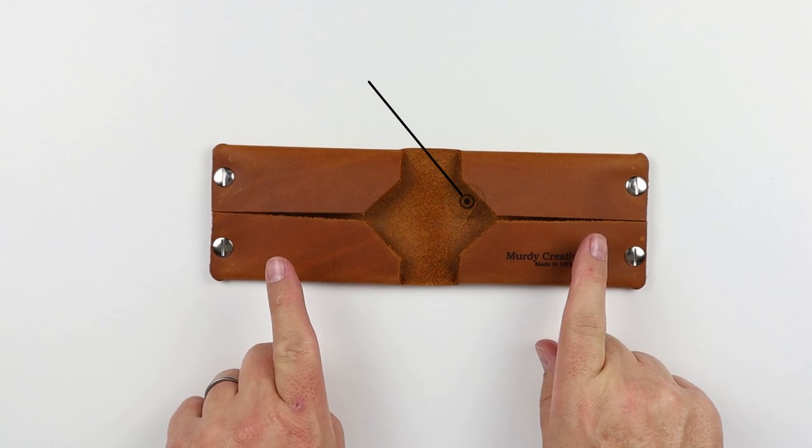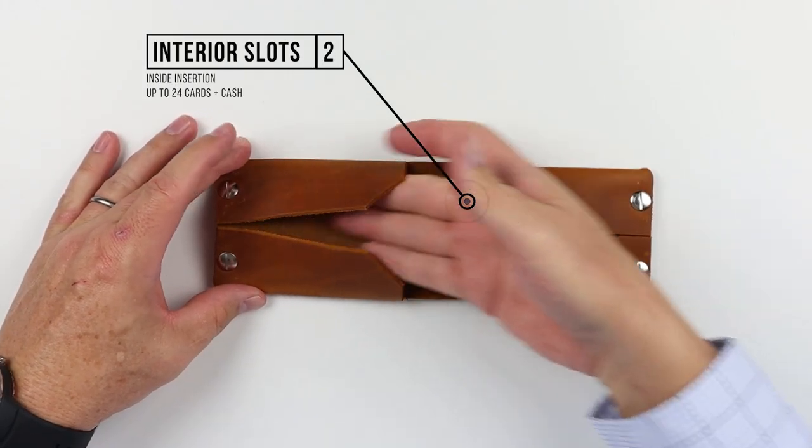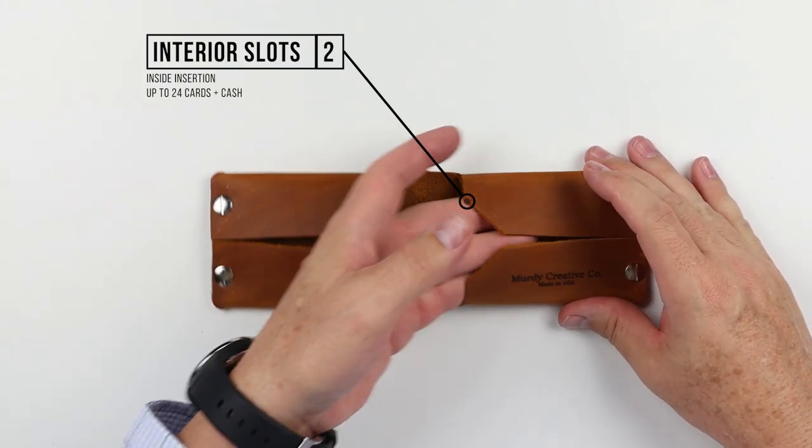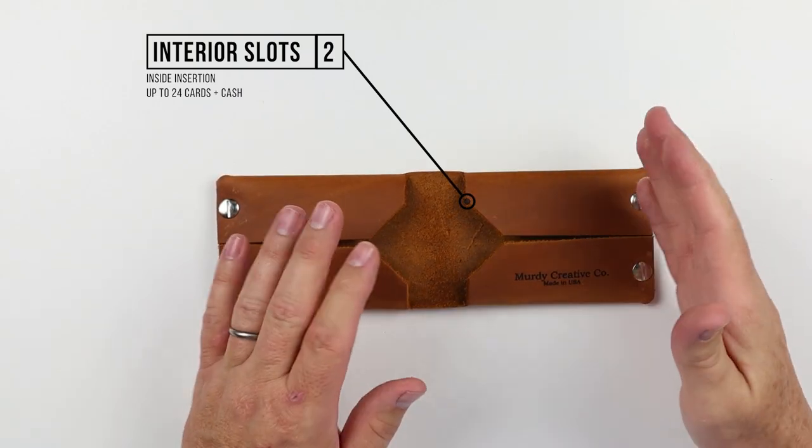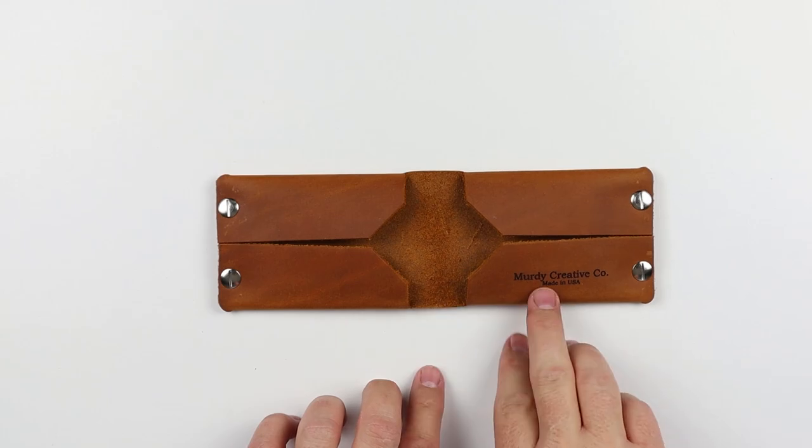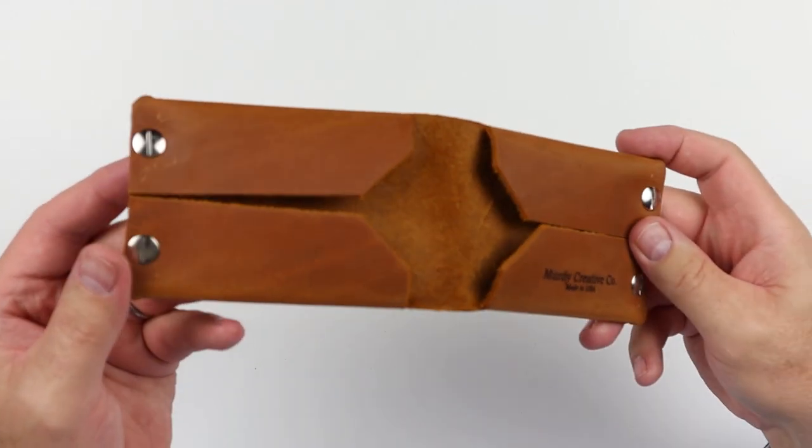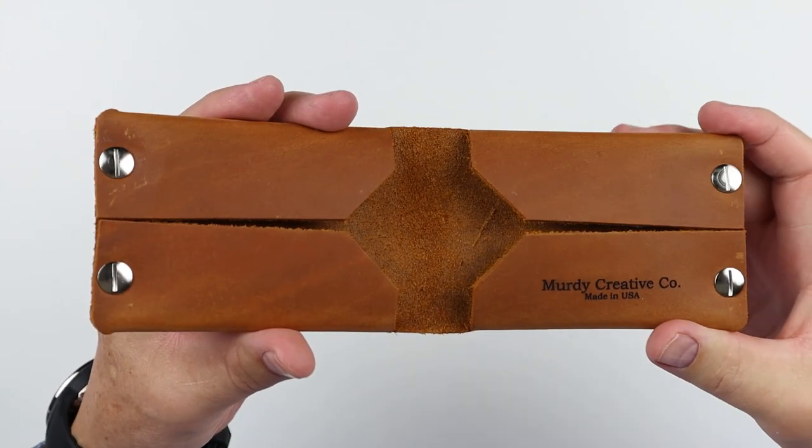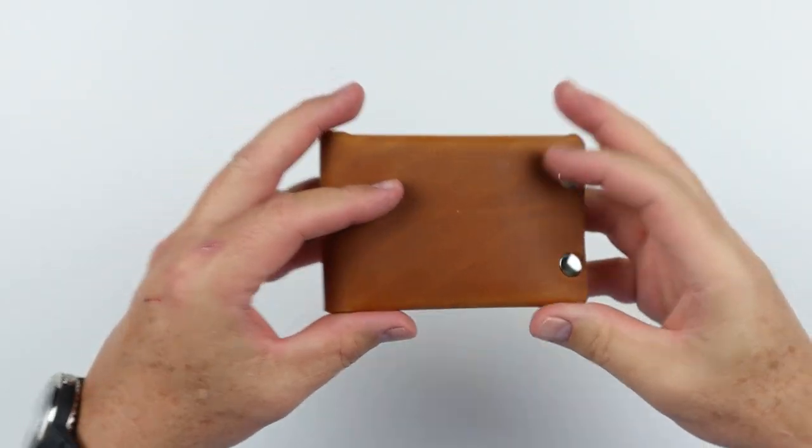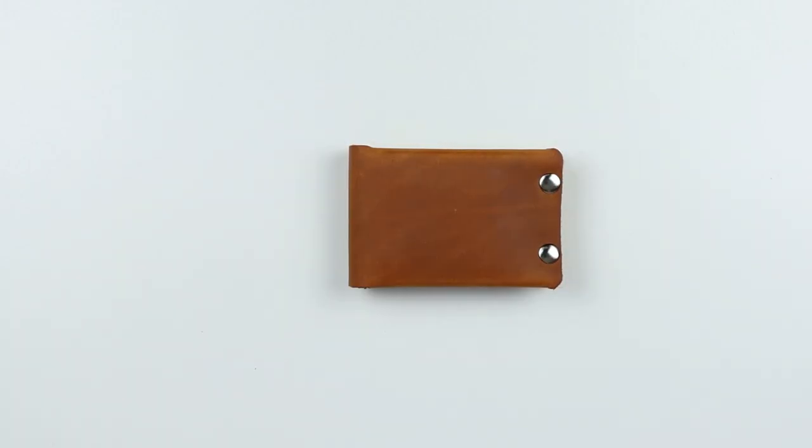What do we have? Well, two interior slots. It's an inside insertion here from the fold, which provides security, we'll talk about that. Up to 24 cards, plus cash, cash folded at least in thirds or quarters is what we would see here. And we will look at the details a little bit more, but it is a fairly simple yet elegant wallet. And that's a quick review of the features of the Merdy Creative Bifold Wallet.